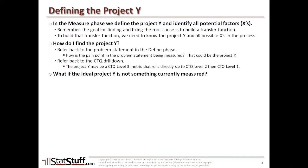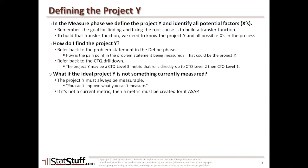What if the ideal project Y is not something you're currently measuring — not already an existing metric or identified in your define phase? If it's not currently measured, you've got to make it measurable. You may need to create a measurement system to define the standard for the project Y. You can't improve what you can't measure, so it has to be measurable to know whether you're actually making an improvement. If it's not currently a metric, create one as soon as possible, as it will serve as a baseline to measure your progress.